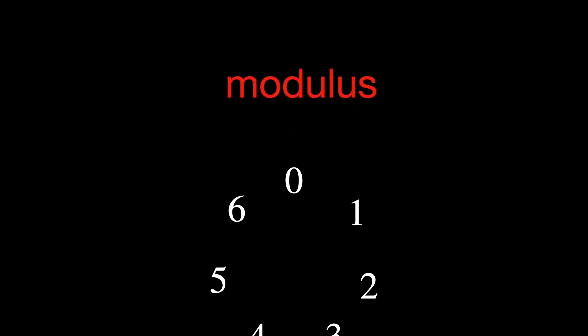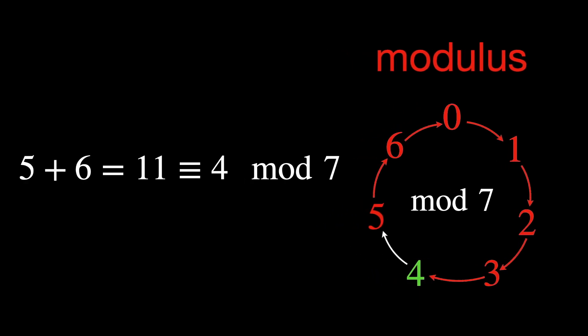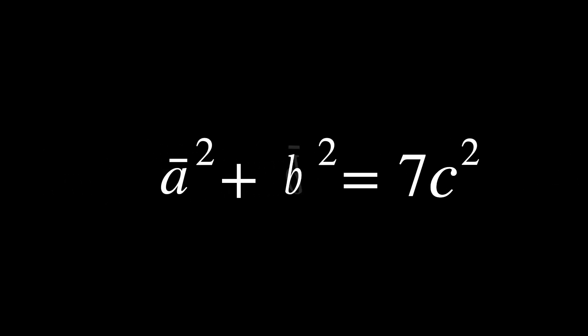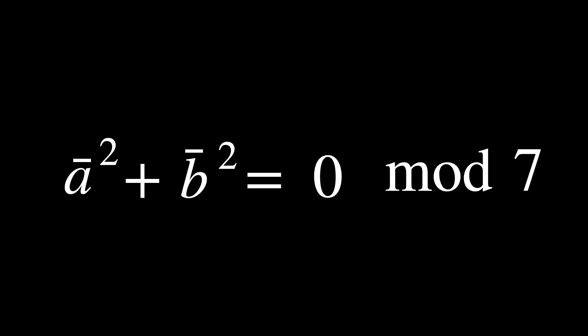The reduction modulo 7 is natural here because the coefficient 7 appears explicitly in 7c squared. Modular arithmetic is basically reducing our available numbers to a certain value called the modulus — in our case, 7. So 5 plus 6 equals 4. This can be done for any operation: multiplication, subtraction, etc. Since 7 is divisible by 7, we know that 7 is equivalent to 0 in modulo 7. So for 7c squared, no matter what c squared is, the product 7c squared is still divisible by 7, which means 7c squared is equivalent to 0 modulo 7. The equation becomes a-bar squared plus b-bar squared equals 0 modulo 7, where a-bar and b-bar are the reductions of a and b modulo 7.